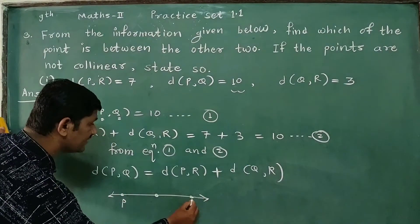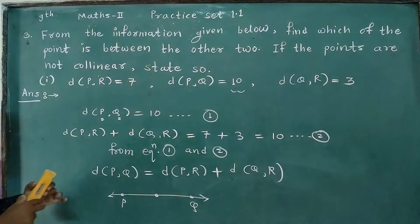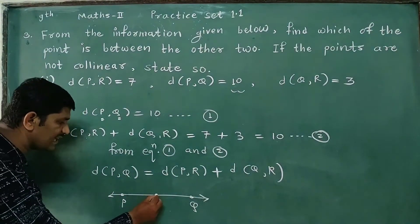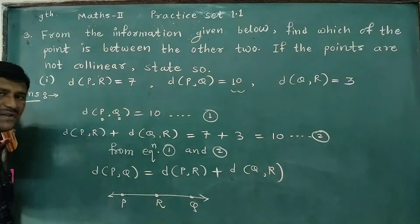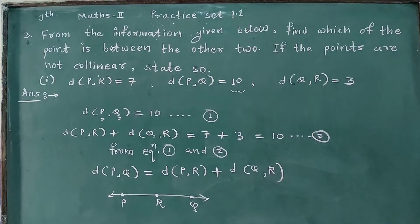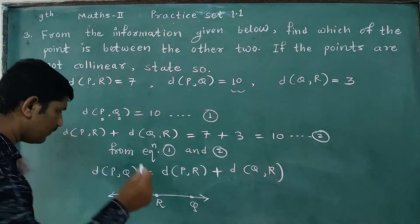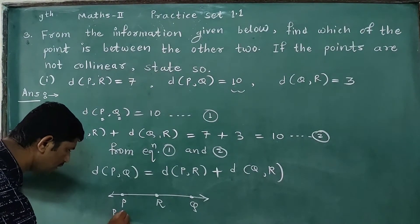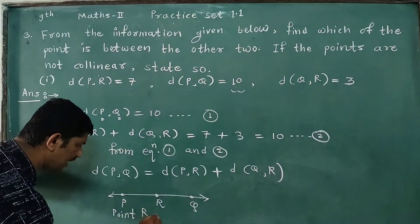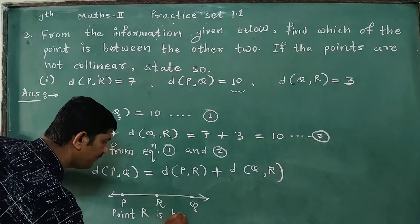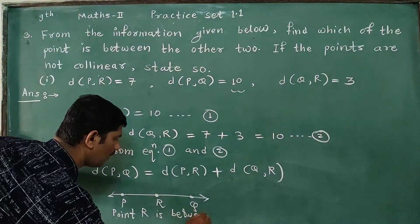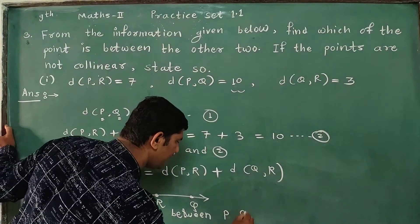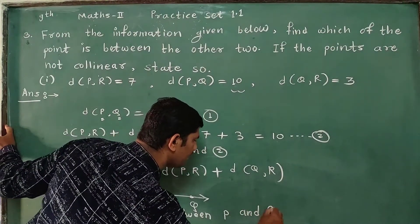With Point Q and another point R, Point R is between Point P and Point Q.